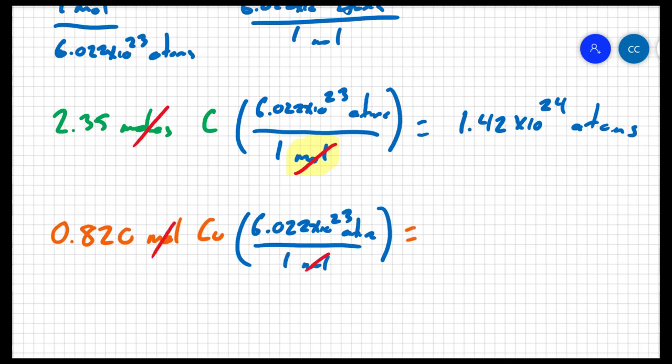And I'm left with 4.94 times 10 to the 23 atoms. And this should make sense, because I have less than 1 mole, and 1 mole is 6.022 times 10 to the 23, so I have a little bit less, so the numbers actually match my expectation.